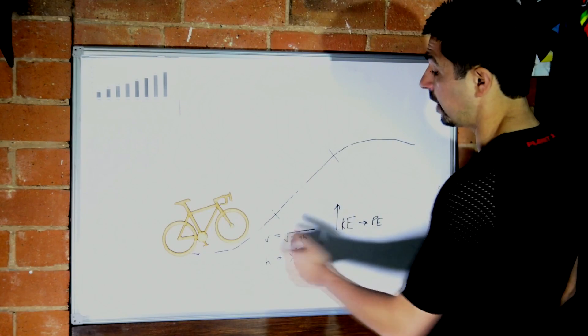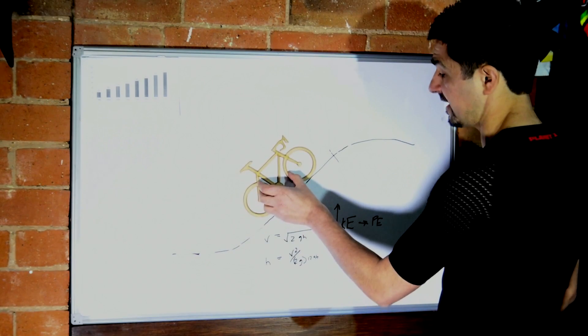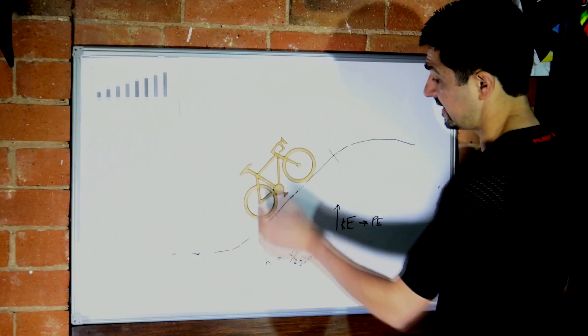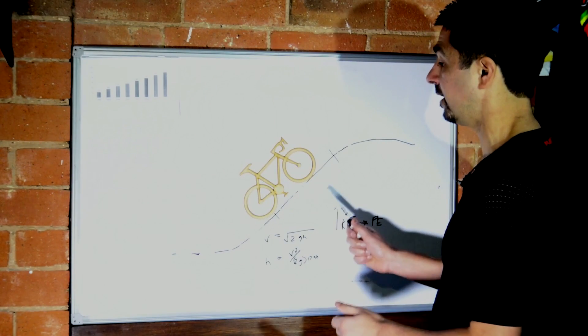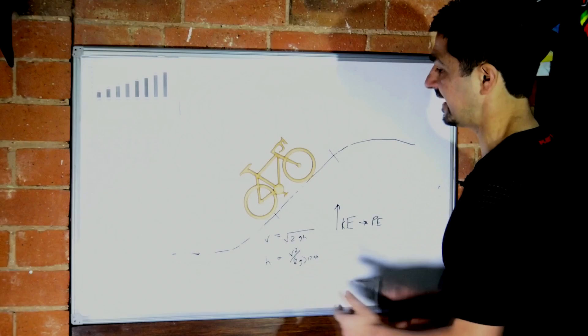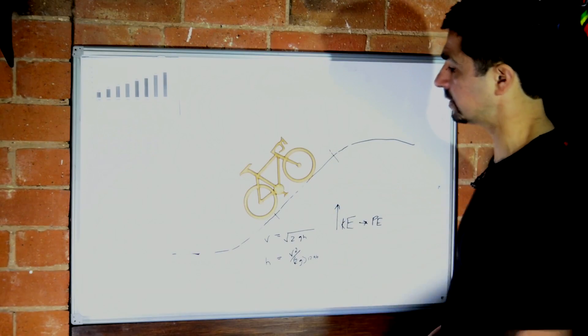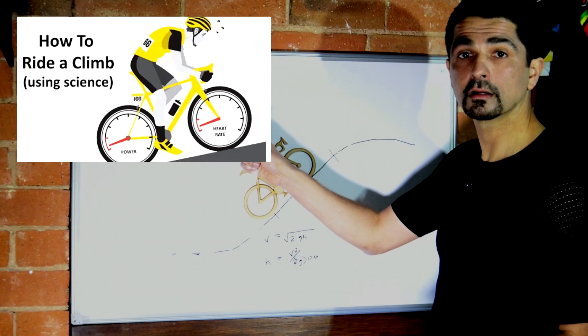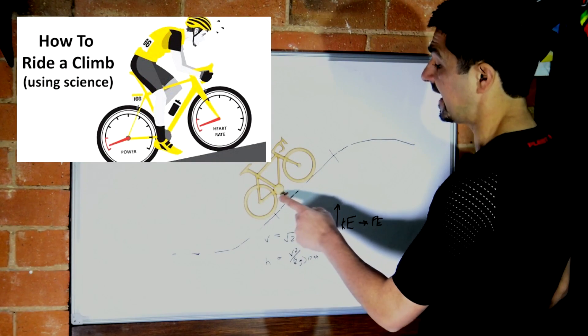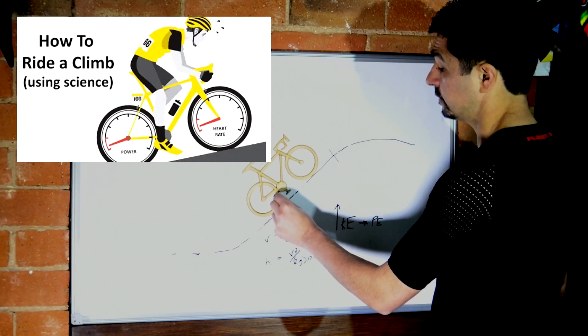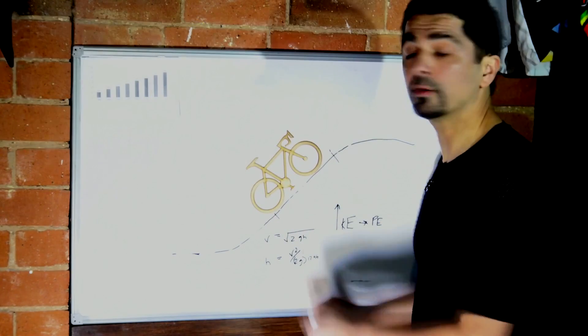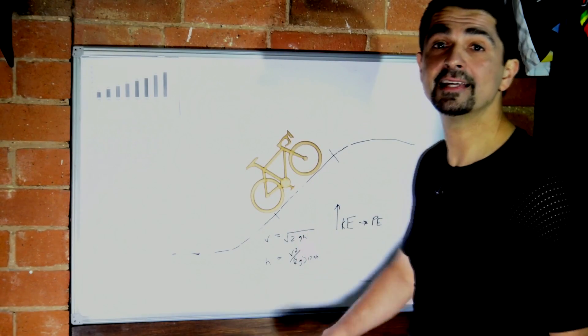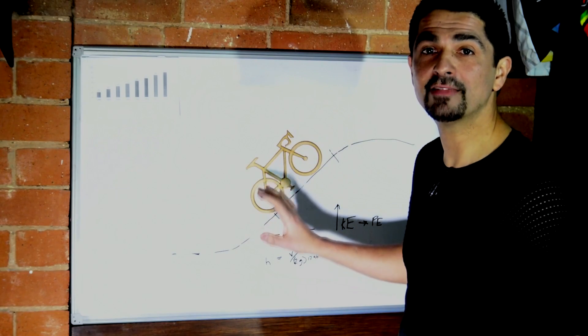If the climb is very long, you go into an equilibrium phase whereby you have to choose the amount of power that you can sustain for the length of that hill. I've previously covered that on a previous video. But what I do want to tell you about the equilibrium phase today is try not to be scared about the grade of the hill.